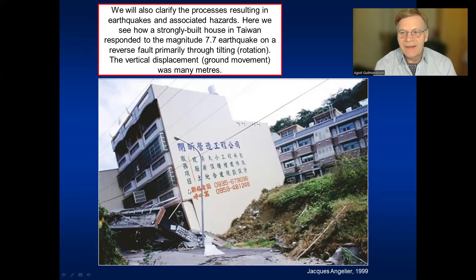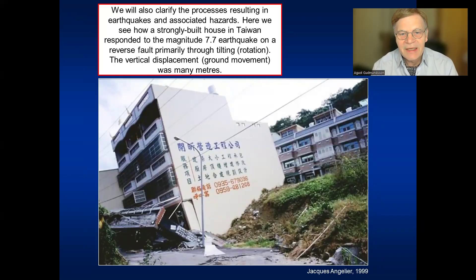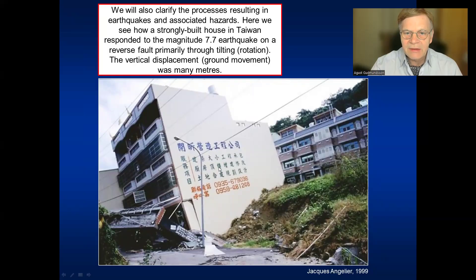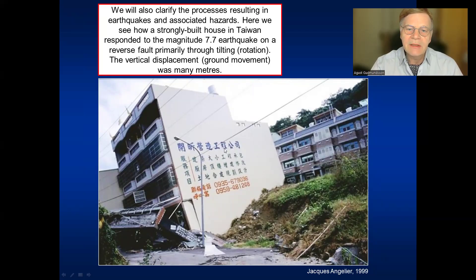But eruptions are not the only hazards that people face in various places on Earth. Earthquakes are common. Here we see an example of a rather large earthquake — magnitude 7.7 in Taiwan in 1999. This earthquake resulted in a so-called reverse fault movement, and the ground movement was many meters. This building was well built and strong and was able to sustain the earthquake, mainly through rotation — as you can see, there was huge damage in this earthquake. But this building shows that strong buildings can sustain even large earthquakes, something we need to keep in mind for the future.